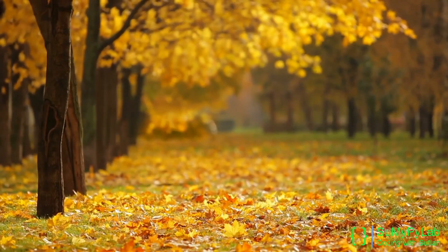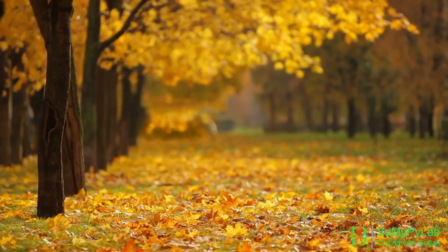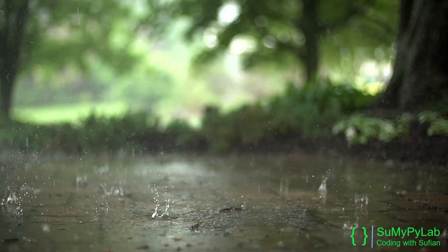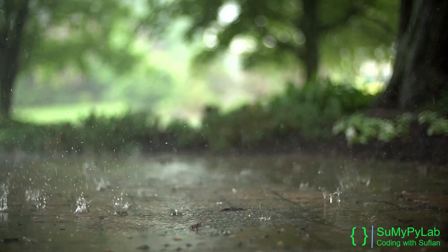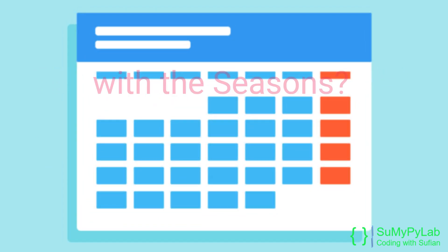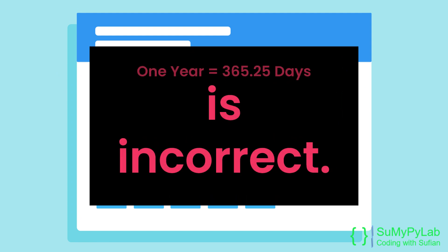Now the question arises: why was such a bold step of removing 10 days needed in 1582? The simple answer is it was needed for synchronizing the calendar with astronomical seasons, because the Julian calendar was unable to sync with the astronomical seasons. This is due to an error in the calculation of leap years in the Julian calendar.